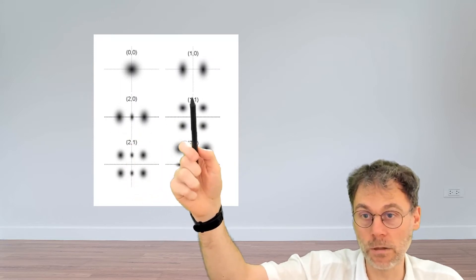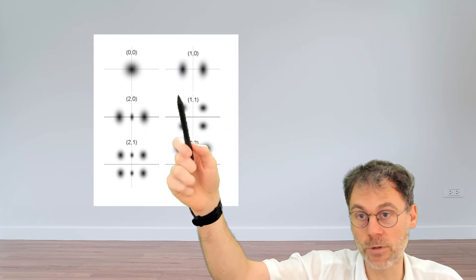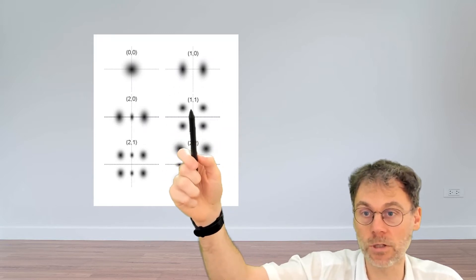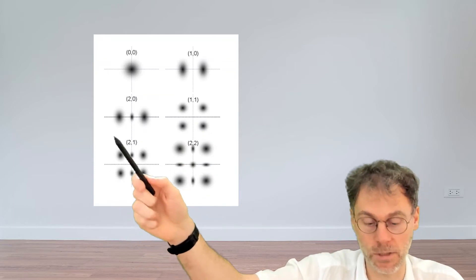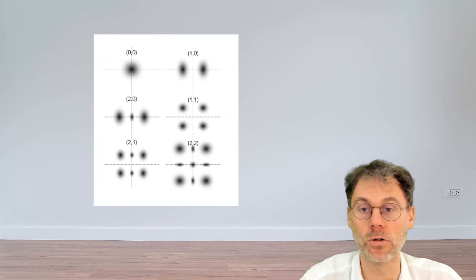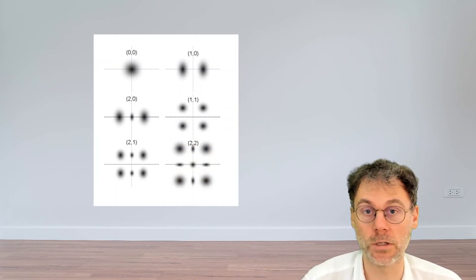This, for example, is 1, 1, where you have these two blobs both in the x and in the y direction. So all in all four different spots. And then you can play around with other possibilities. So this is 2, 1, this is 2, 2. So these are the higher order solutions to the paraxial wave equation, the so-called Gauss-Hermite modes.